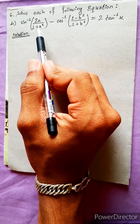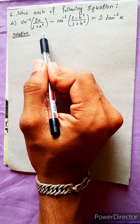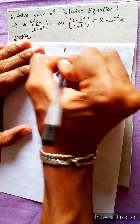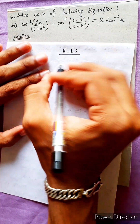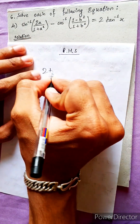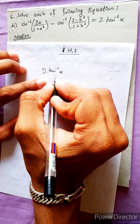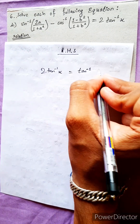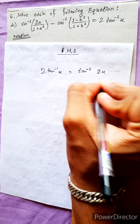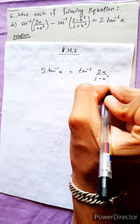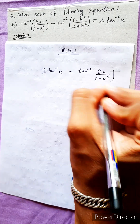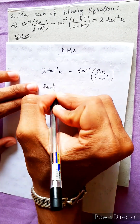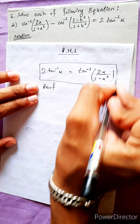We will solve each of the following equations. We will see the right-hand side. This is a special formula: 2·tan⁻¹(x) equals tan⁻¹(2x / (1 - x²)). This is a formula. We will now see the proof.